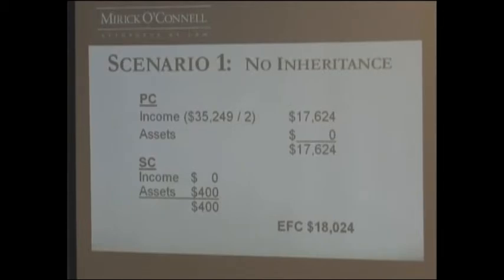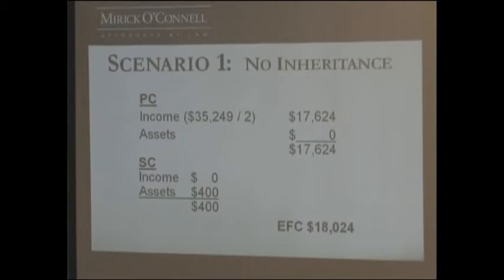Because the federal formula does not include assets in the primary residence, they weren't looking at anything under the assets. The other assets were not included because of the parent's age set-aside. With the student, $5,000 of income and $2,000 of assets were given. The formula did not look at the $5,000 of income and only took $400 of the $2,000 the student had in savings. So you add the $17,624 and the $400 and get the $18,024 expected family contribution for that scenario.